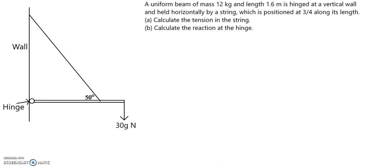In this mechanics video we have a uniform beam of mass 12 kg and length 1.6 m which is hinged at a vertical wall and held horizontally by a string which is positioned at three-quarters along its length.